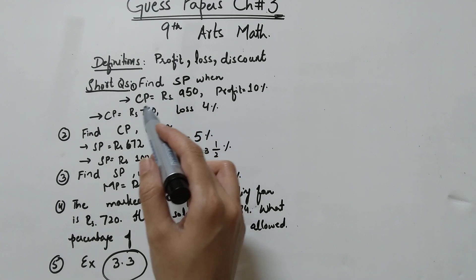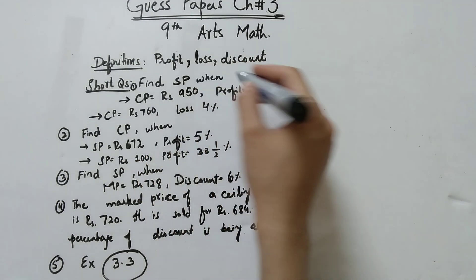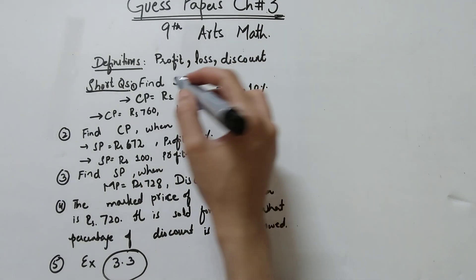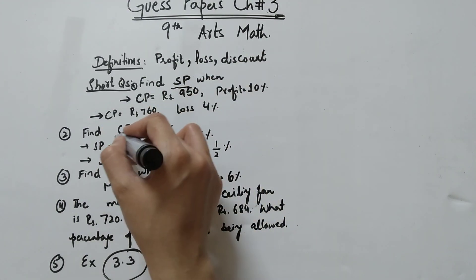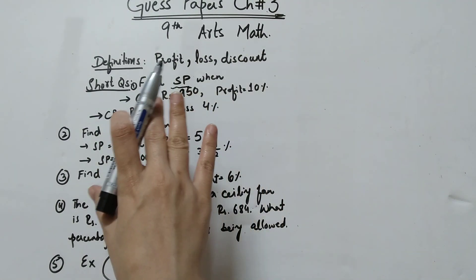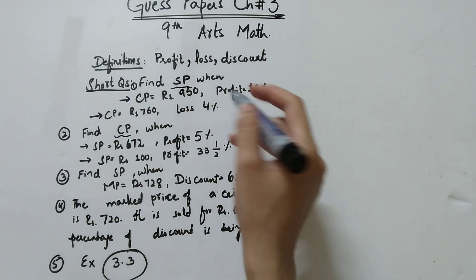Short questions here are 3.1. Question number 1 and question number 2. One is you have to find SP and the other is to find CP. There are different short parts. Here I have two parts.